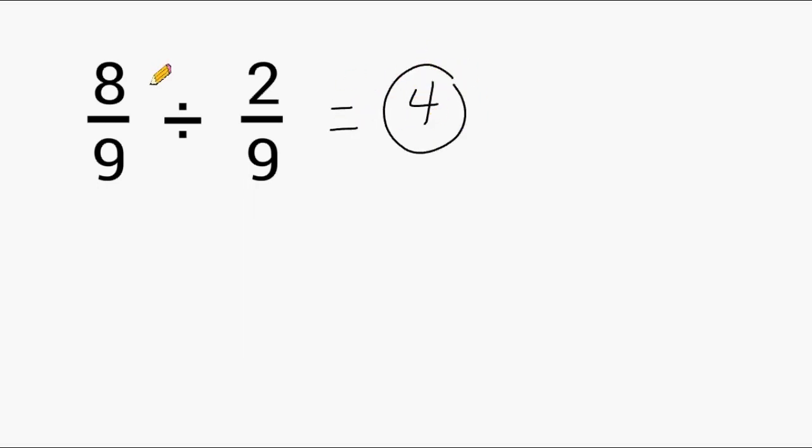Now, remember, you are only allowed to divide the numerators if the denominators are the same. Now, the method that you probably hear most often from your teachers is the keep-change-flip method. That is where you keep the first fraction as it is, and you change the division sign to multiplication, and you flip the numerator and the denominator of the second fraction. It's the reciprocal.